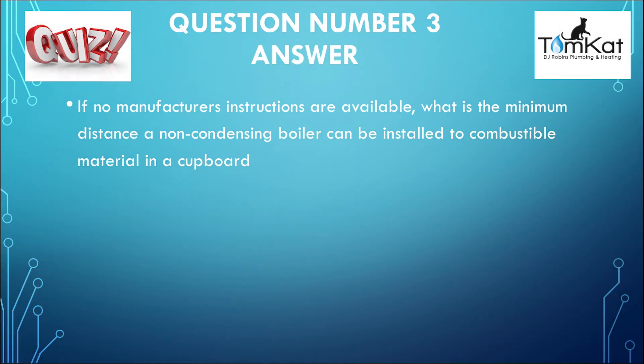So are you proving me wrong so far? Have you got two out of two? Are you going to make it a hat-trick? Let's look at the answer for question three: if no manufacturer's instructions are available, what is the minimum distance a non-condensing boiler can be installed to combustible material in a cupboard? The answer is C — 75 millimetres. That's the answer to question number three.